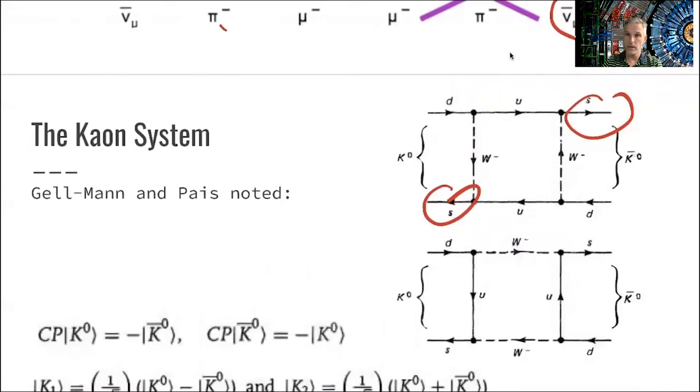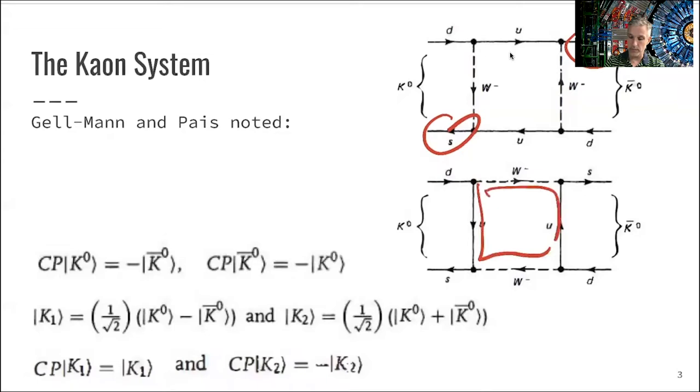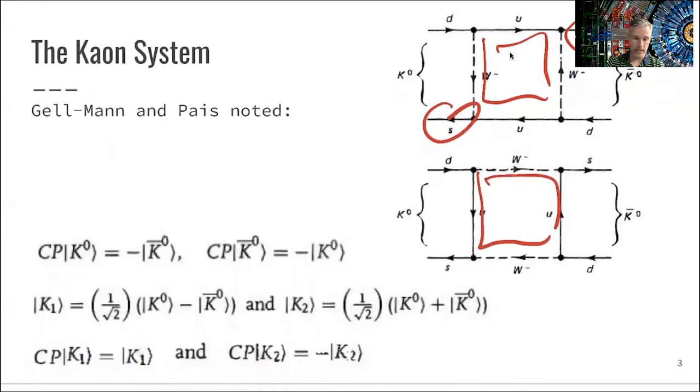That's possible in these kind of box diagrams, which include a box with a couple of Ws. It's easy to see that if you prepare a K0, it will oscillate into an antiparticle. So now what is happening to CP here? If I apply CP on a K0, I find a minus sign in an antiparticle.